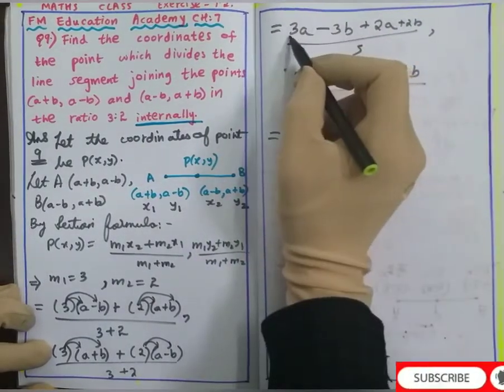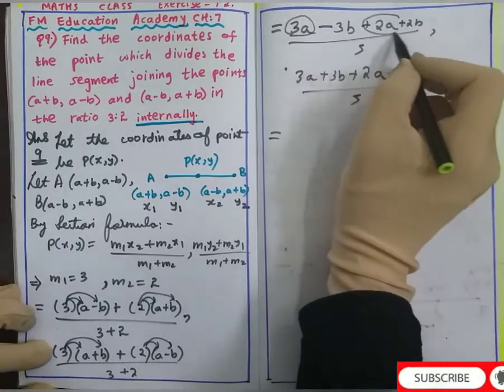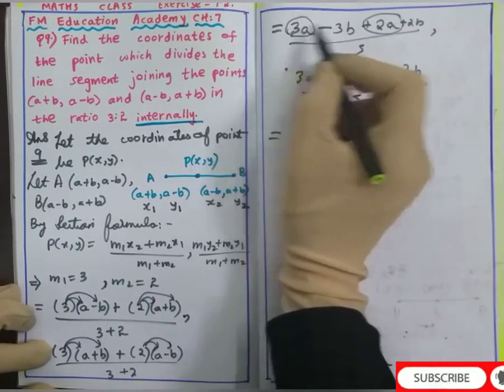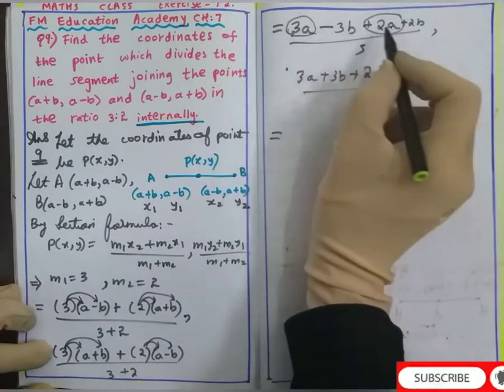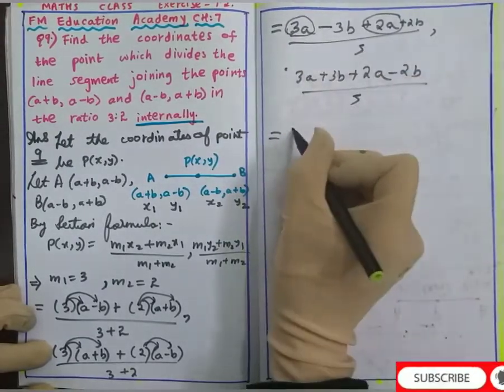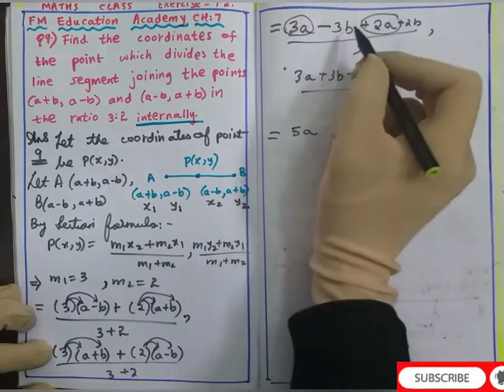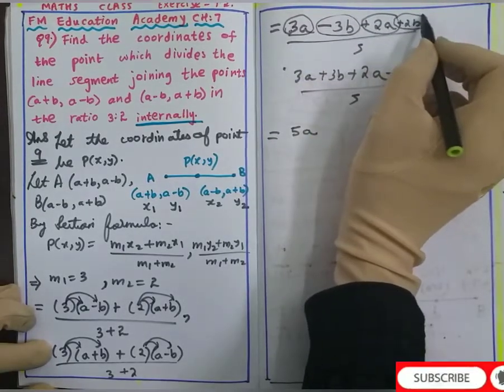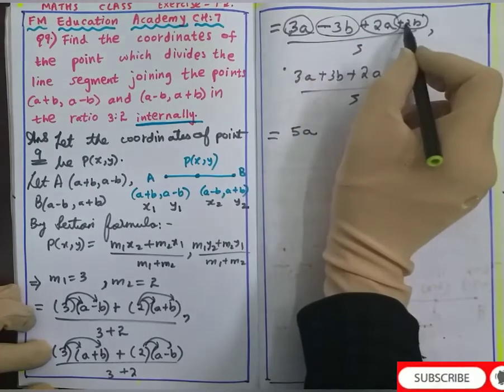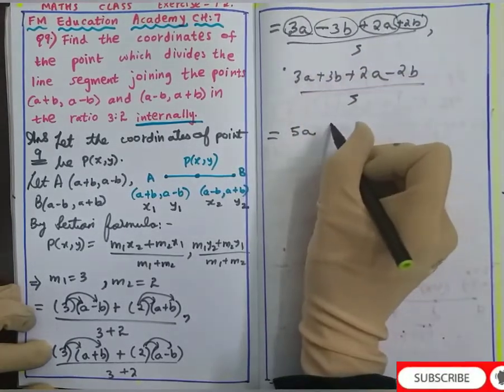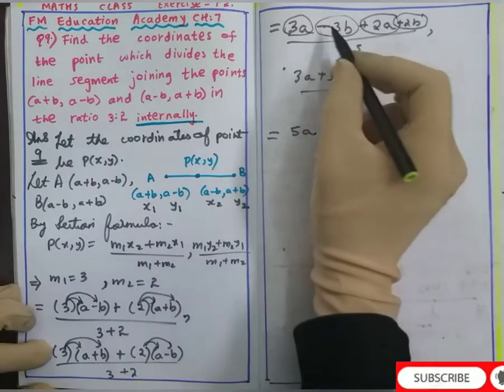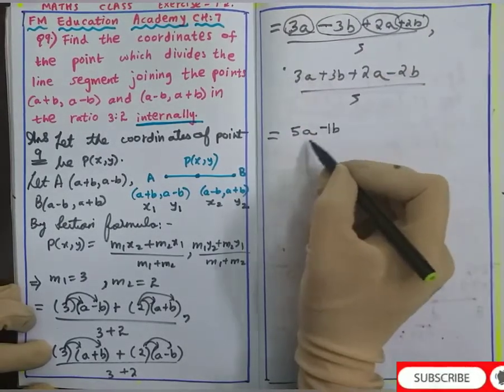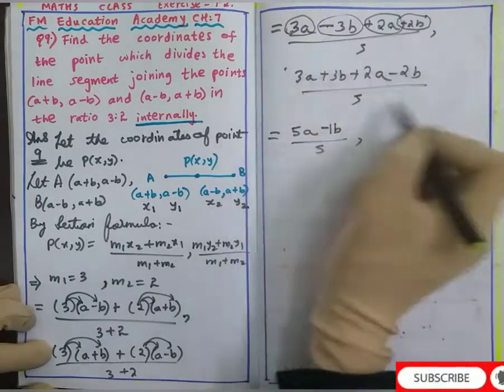Now observe the a coefficients: we have 3a and 2a. The coefficient of a is 3 and 2, both having plus signs. When signs are same we add. So 3 + 2 is 5a. For b terms, we have -3b and +2b. One is minus and one is plus so we subtract. 3 - 2 is 1b, and the sign is minus by 5.